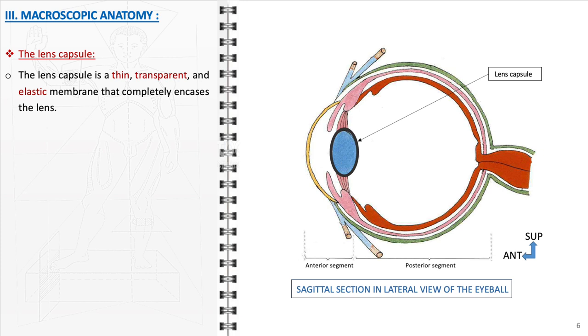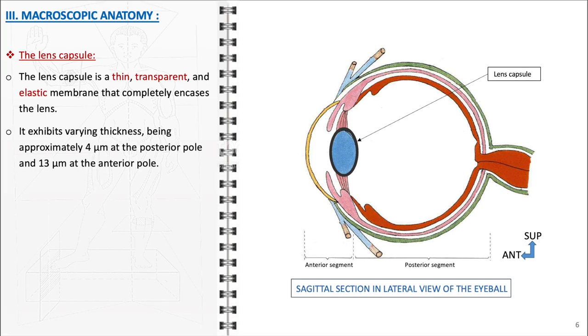The macroscopic anatomy of the lens, comprising the lens capsule and the zonule of Zinn, is intricately designed. The lens capsule is a specialized, thin, transparent and highly elastic membrane that entirely surrounds the lens. Its elasticity is crucial for the process of accommodation, allowing the lens to change shape as it focuses light. It exhibits varying thickness, being approximately 4 micrometers at the posterior pole and 13 micrometers at the anterior pole. This difference in thickness is significant for the biomechanical properties of the lens, affecting its ability to change shape and resist intraocular pressure.